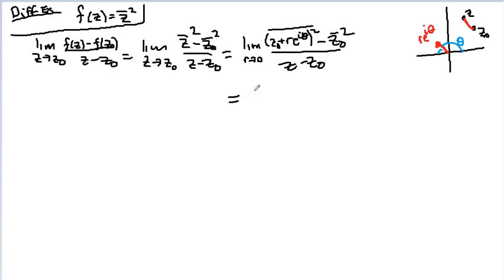And this is equal to the limit as r goes to zero. So I'll put dot, dot, dot, because there's a lot of calculations here, but you can do the calculations. Which equals two conjugate of z naught e to the negative two i theta plus r e to the negative three i theta.